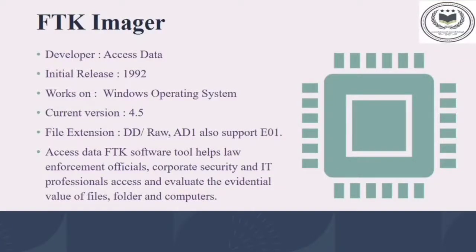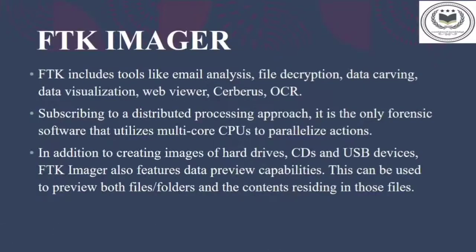Our next tool is FTK Imager, which was released in 1992 for the Windows operating system. The current version is 4.5 and it supports file extensions DD or raw data, ADI, and also EO1. It is used by law enforcement officials, corporate security, and IT professionals. It allows data extraction from files, folders, and computers. FTK Imager can analyze emails, decrypt files, visualize data, carve data, and utilizes multi-core CPUs to parallelize actions.